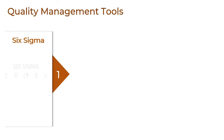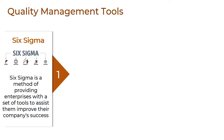The first tool is Six Sigma. Six Sigma is a method of providing enterprises with a set of tools to assist them improve their company's success. It is a disciplined, data-driven approach and methodology that usually aims to eliminate defects in any process ranging from manufacturing to transactional and product to service. In general, it means a measure of quality that strives for near perfection.